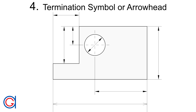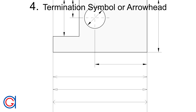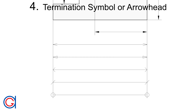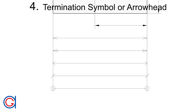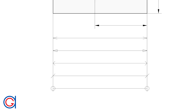Rule 4: There are many ways to represent the termination symbol or arrowhead. In our video we use a filled-in black arrowhead at approximately 30 degrees angle. But there are many other ways to represent the termination symbols as shown here.